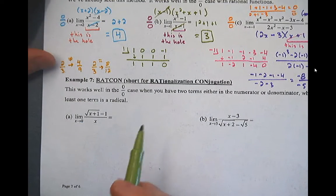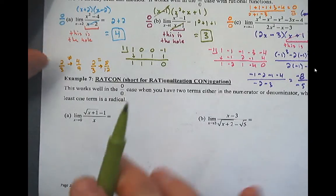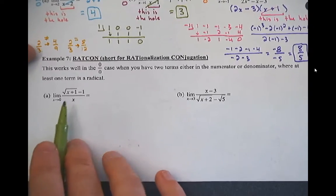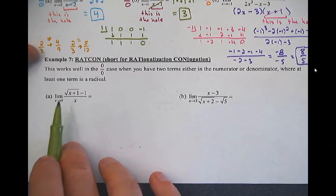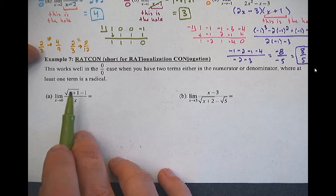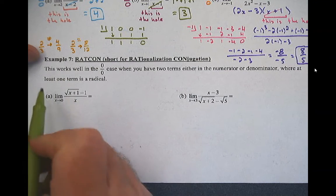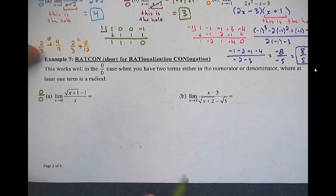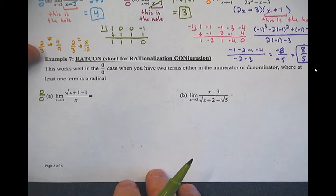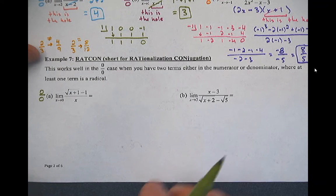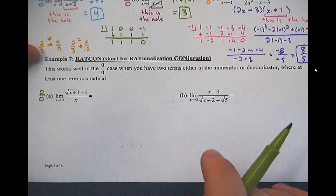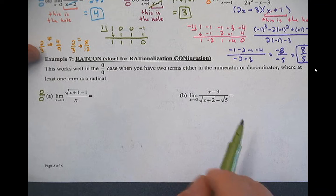So what we do instead — never not first — is direct substitute. Plug in zero: zero plus one is one, square root of one is one, one minus one is zero. Plug in zero on the bottom: zero over zero, that means there's a hole. We've got this indeterminate form. We're going to try to now eliminate where the hole is.